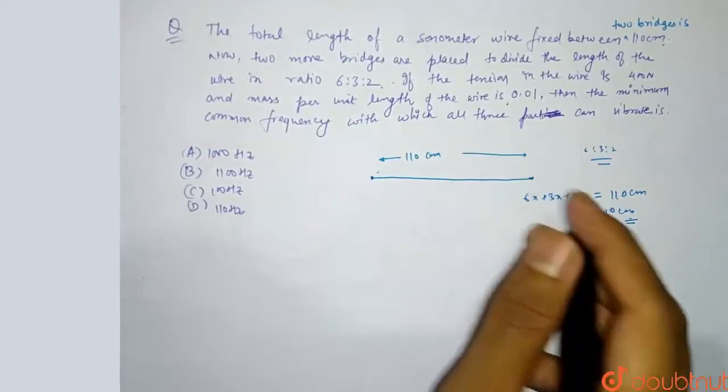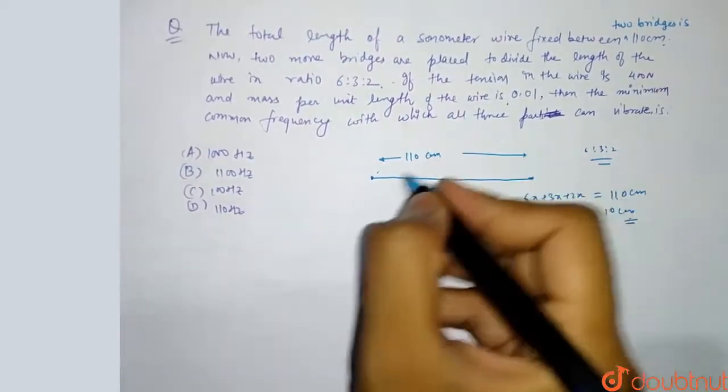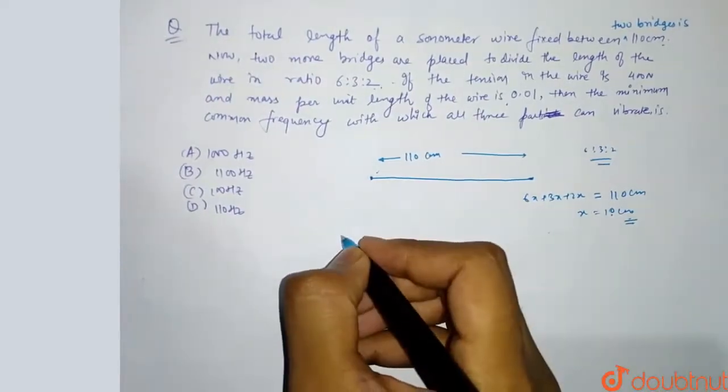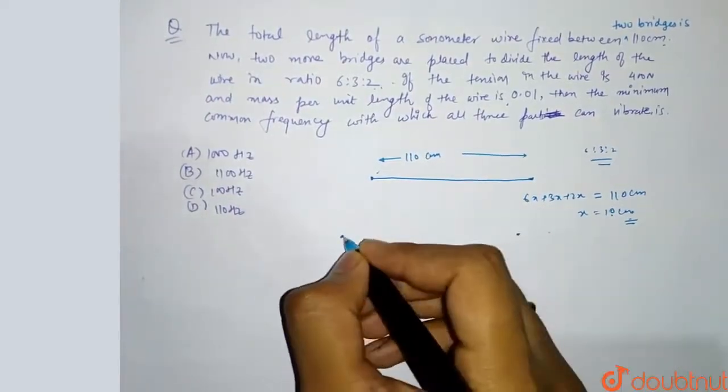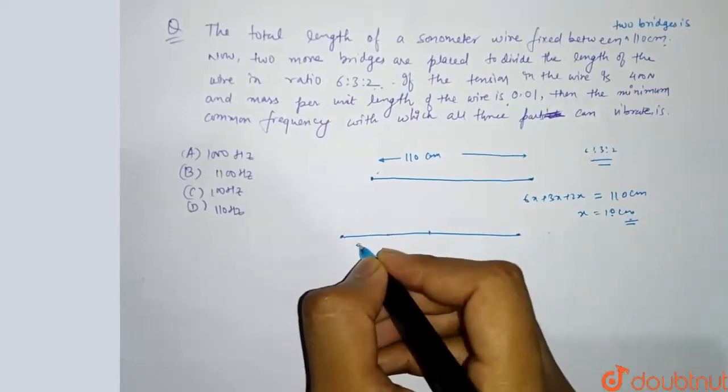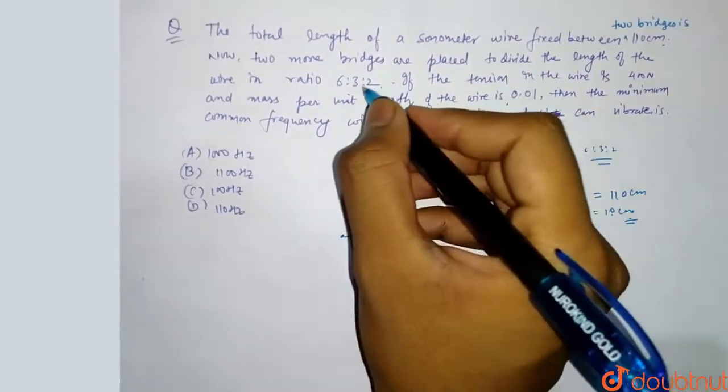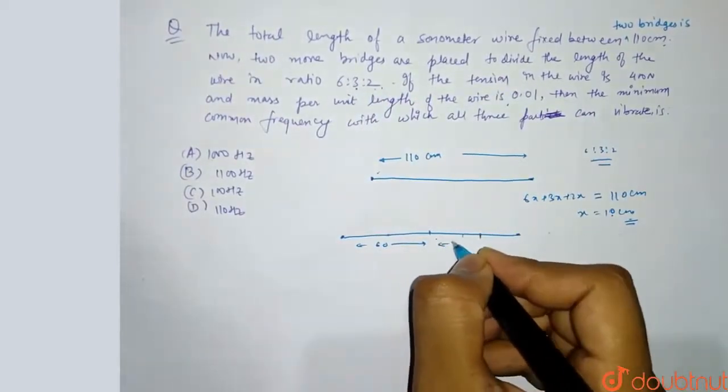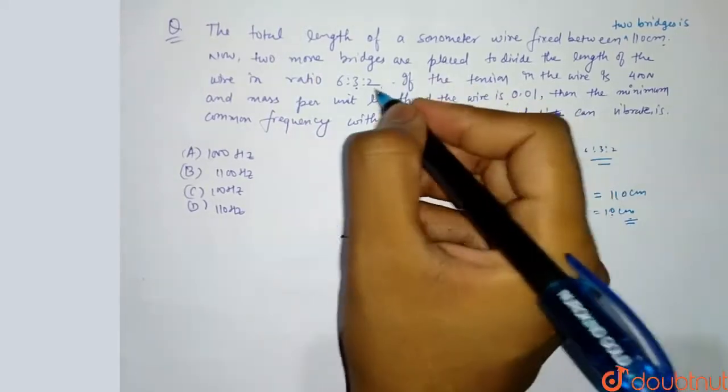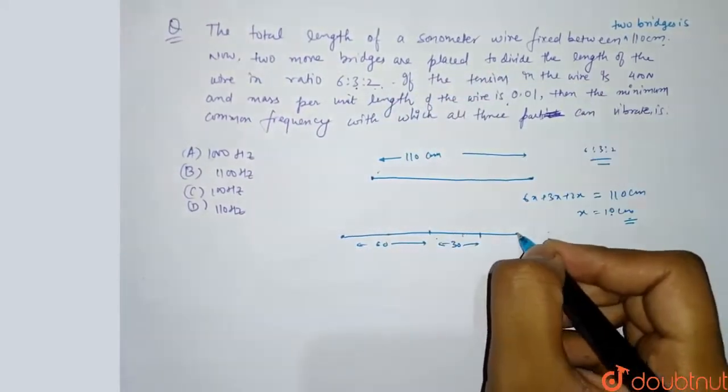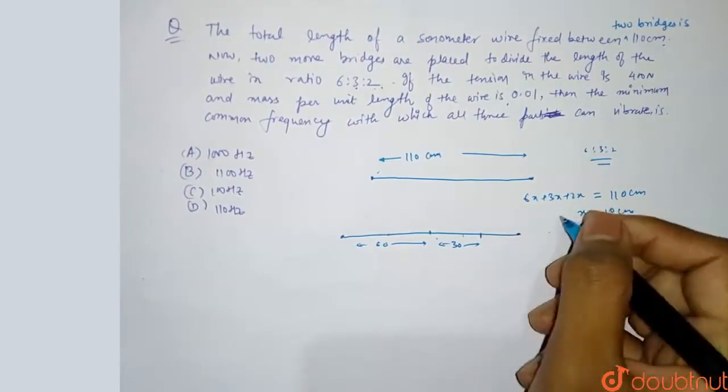Now let's make bridges. The first one is 6x. 6x means 6 into 10 is 60. So this is our wire. This is our first bridge. The second bridge is 3x, 60 plus 30. So here we have the second bridge. And the third bridge is 2x, 20. So 60 plus 30 plus 20. The last bridge is our third bridge.